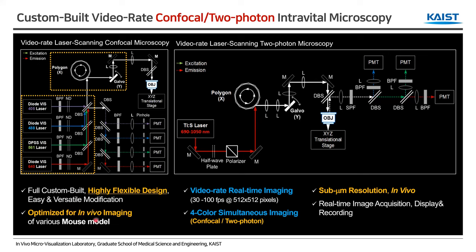The system is optimized for in vivo imaging of live mouse models. It can acquire real-time imaging at video rate — 30 to 100 frames per second — capturing 100 images per second at 500 by 500 pixels using a very fast laser scanner. For both confocal and two-photon imaging modes, it can acquire four fluorescence signals simultaneously and can easily achieve sub-micrometer resolution in live animal models.